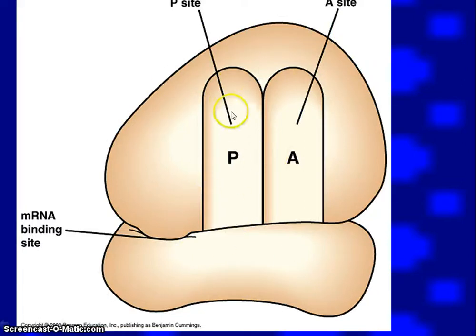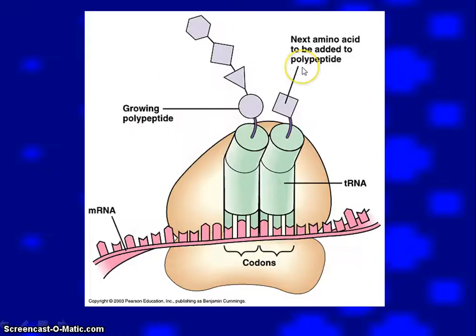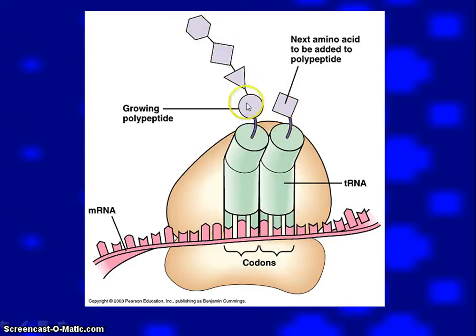At the ribosome, the P site will hold the growing polypeptide chain and the A site holds one amino acid. So the A site holds one amino acid, while the P site is holding the polypeptide chain.